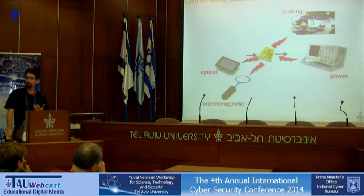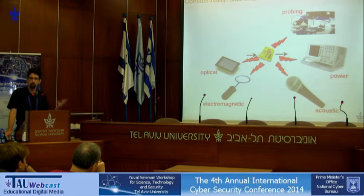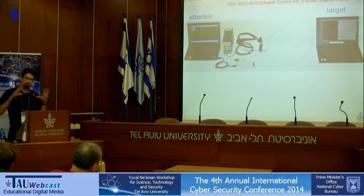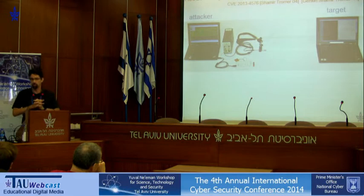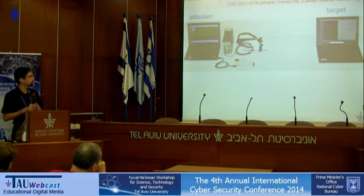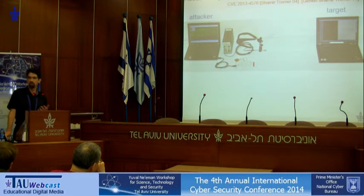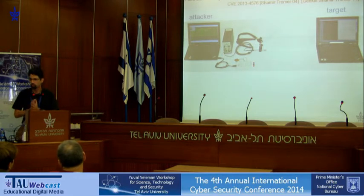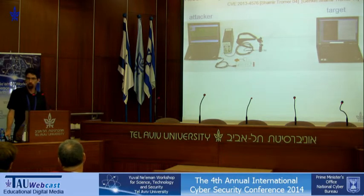In our lab, we found something very interesting: even acoustic emanations — noise made by a computer — can be used to get the secrets from within. That's just one example out of many for the kind of attacks that are possible. Here's an example of one of the setups we have in our lab. On the right side, we have a target computer running standard cryptographic software of the kind used by many millions of people worldwide to encrypt their emails and files, namely GNU-PG.